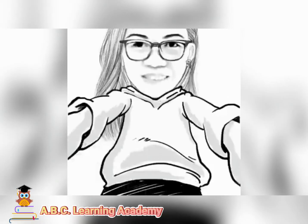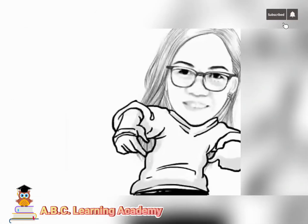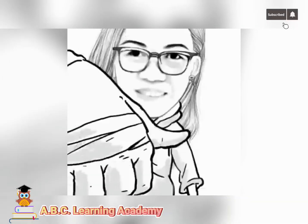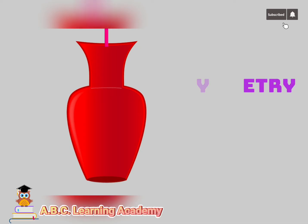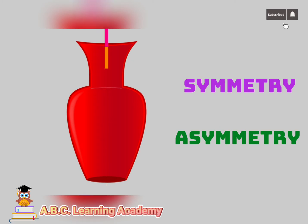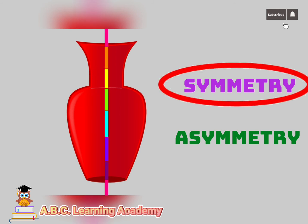Now it's your turn. Tell me if the following shapes are symmetry or asymmetry. Are you ready? First shape — is this one symmetry, or is it asymmetry? Very good. The answer is symmetry.